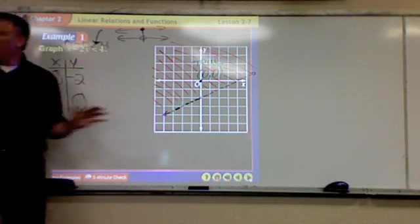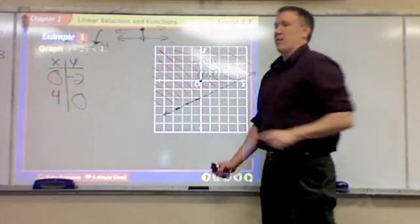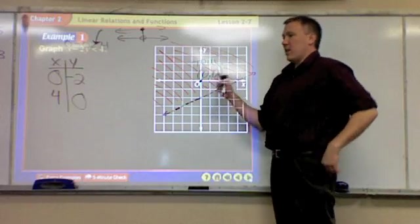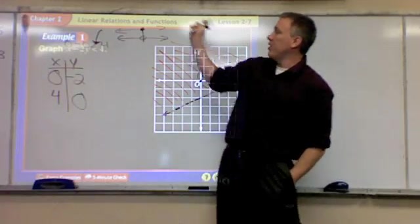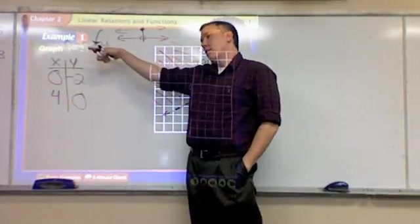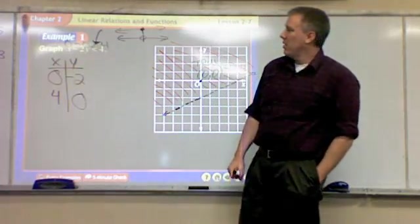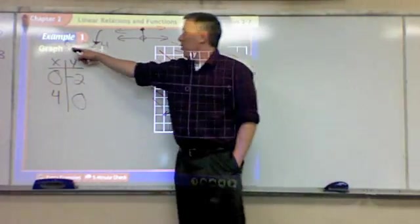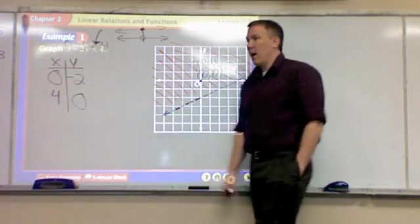You pick any point that's not on the line. And usually (0, 0) is the easiest numbers to use. Okay, so we pick (0, 0) and you throw it into your inequality. So you change the x and y to the values? Yes. And then how do you know it's true? Zero minus zero is zero. Is that less than 4? Yeah. So it's true.